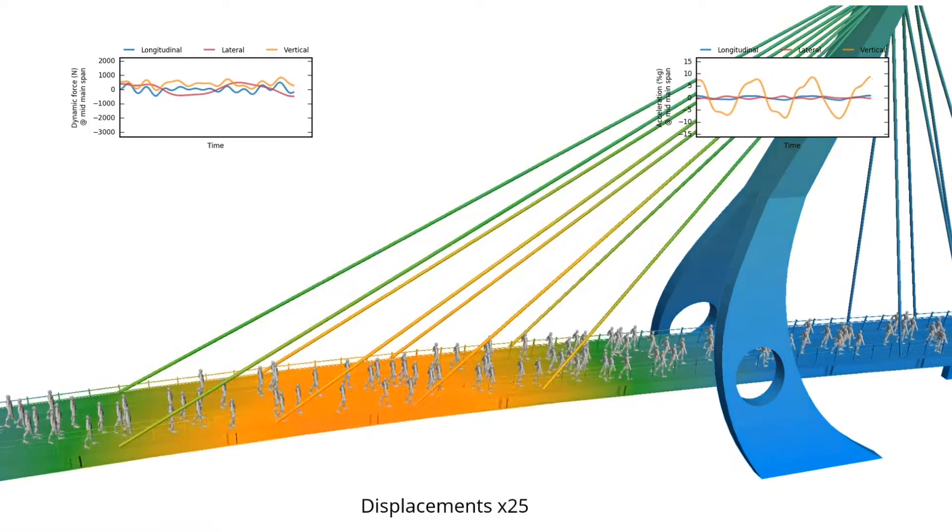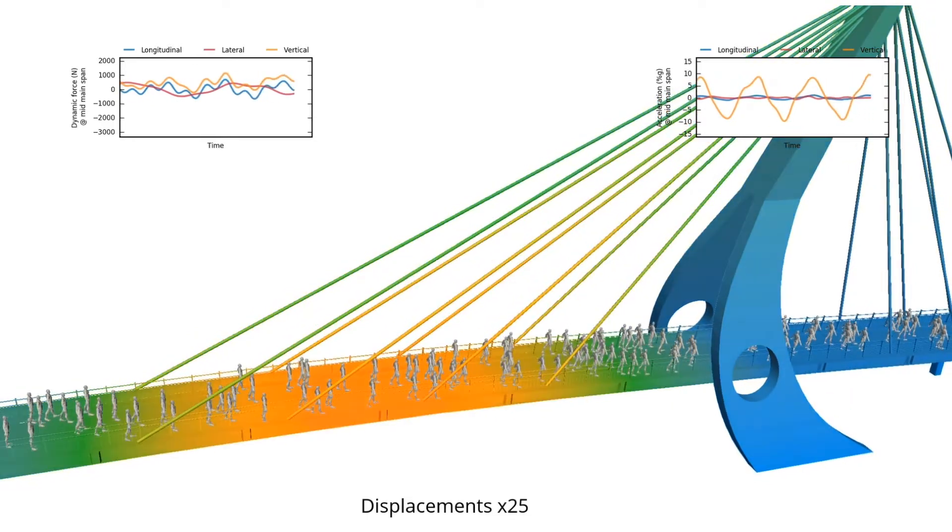On pedestrian bridges, we're often concerned about pedestrian induced vibration, which is basically vibrations caused by people walking across the bridge. Their footfalls produce vertical as well as lateral motions that we need to be aware of.